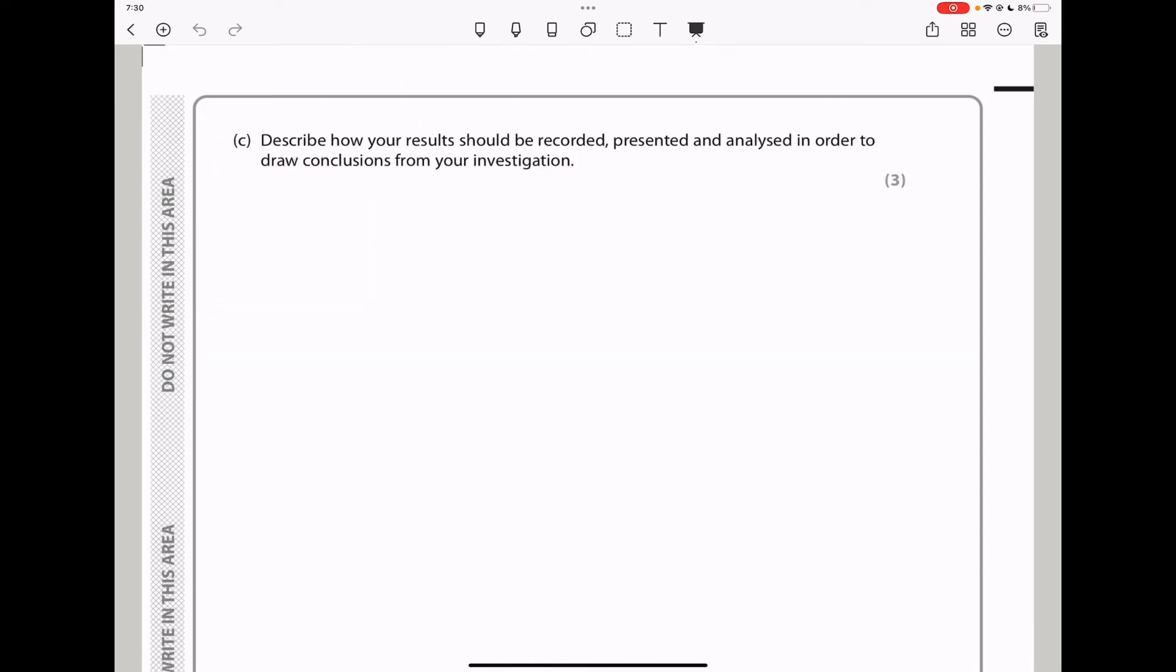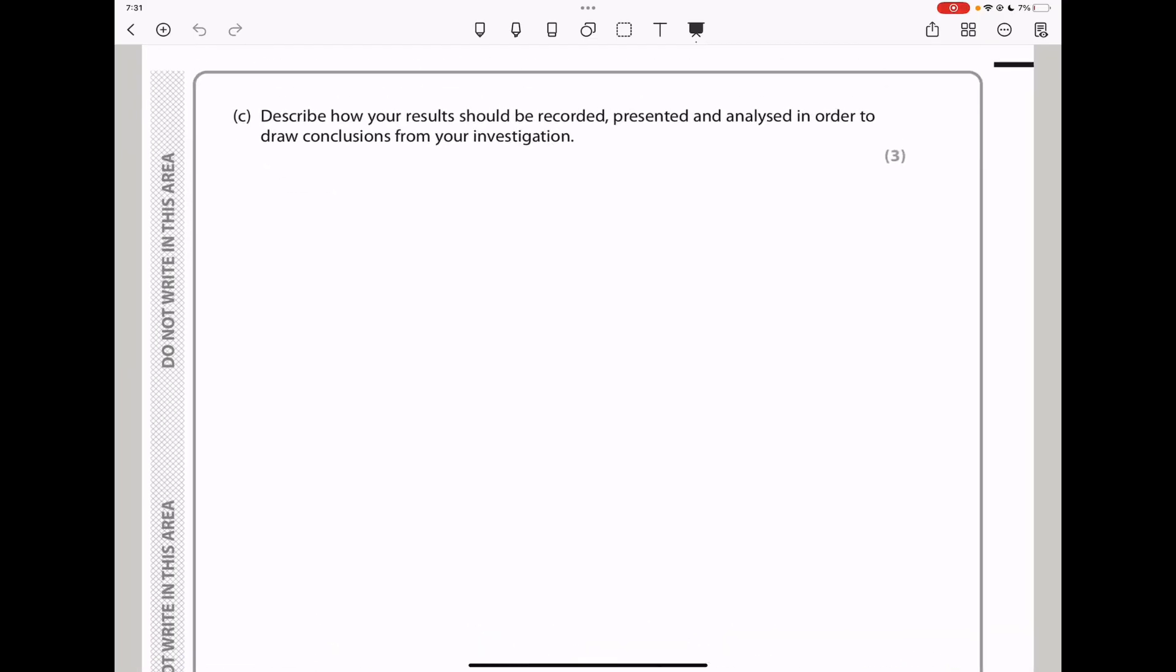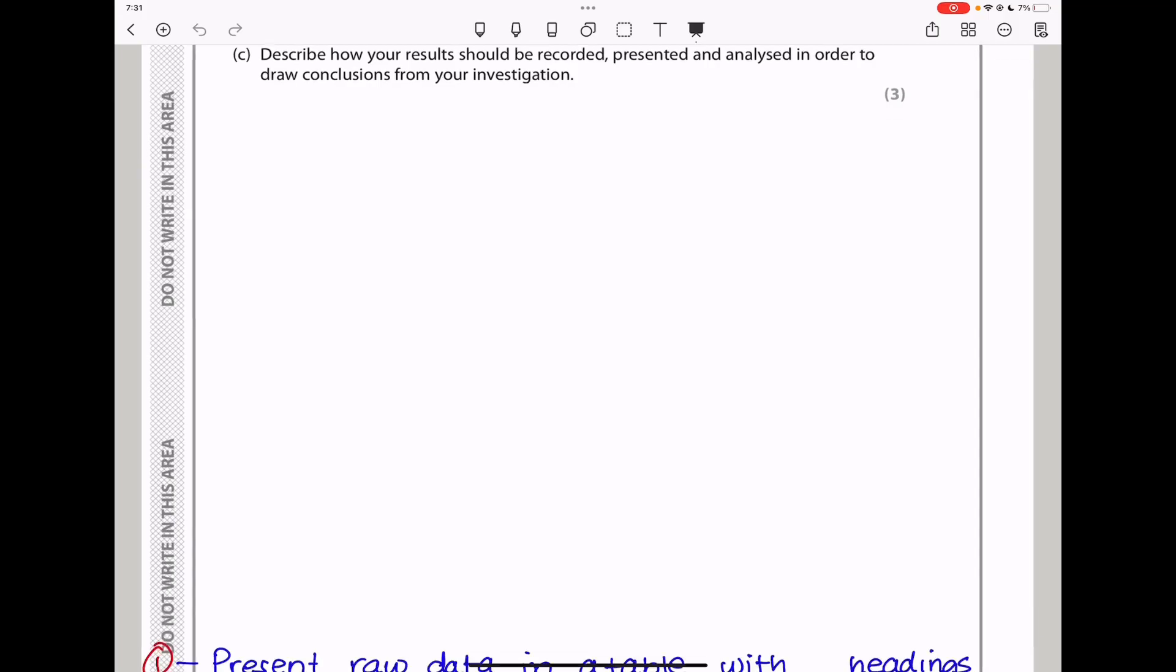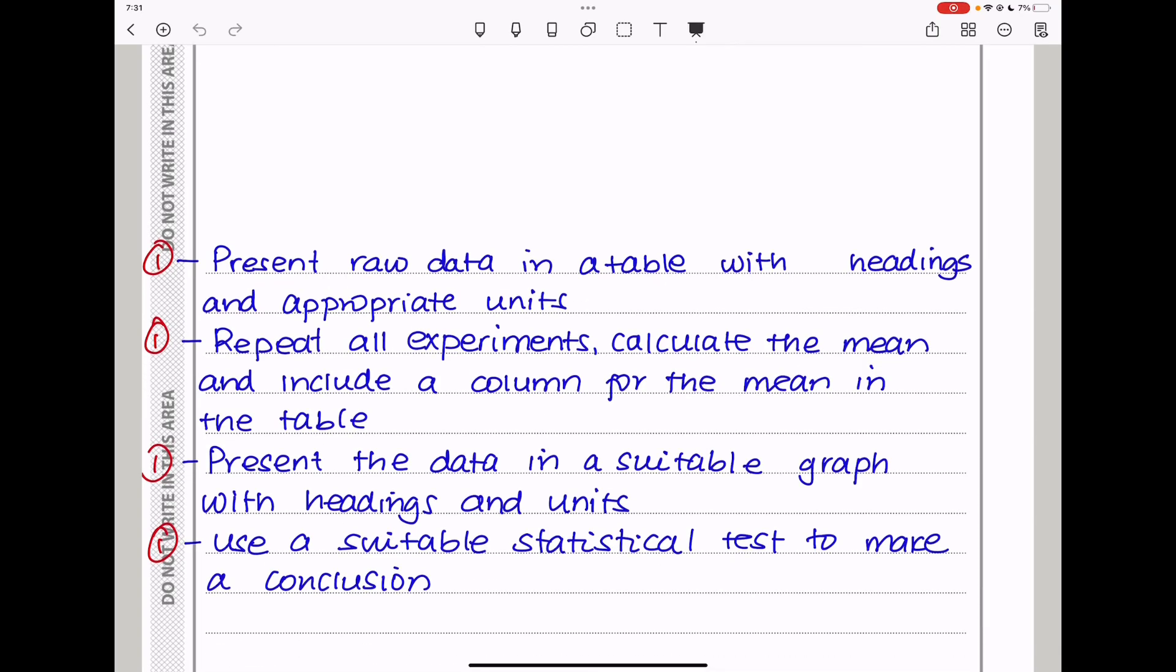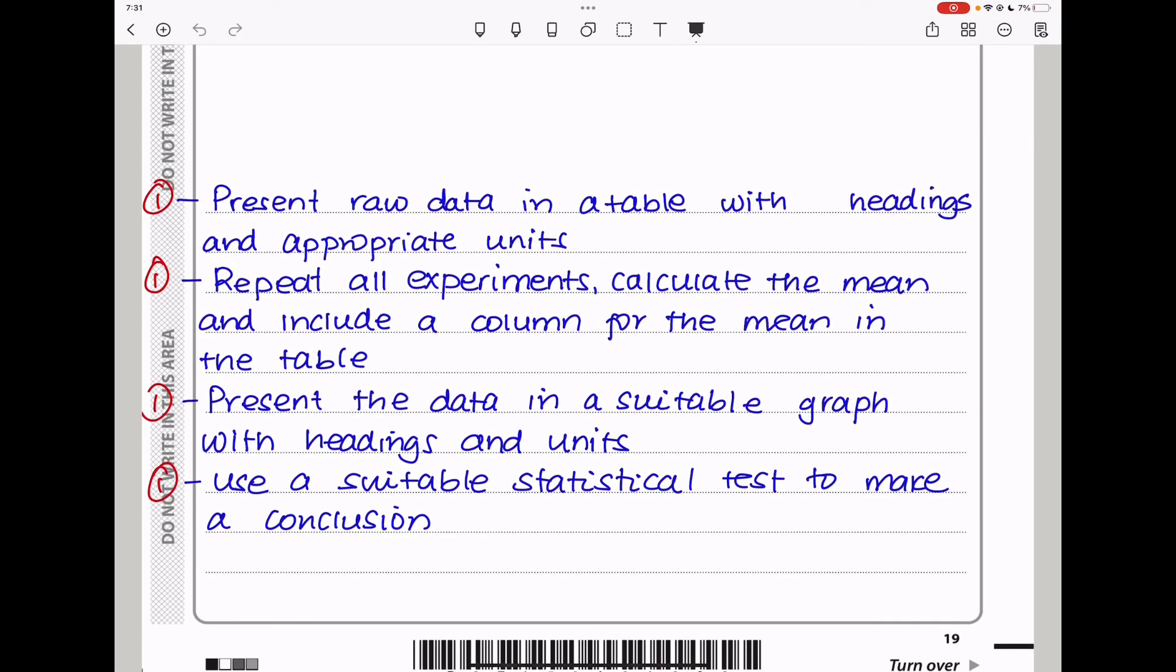In part C, they say, describe how your results should be recorded, presented, and analyzed in order to draw conclusions from your investigation. I did not draw anything in this space and it's not a requirement for you to draw anything so I just wrote down here. So I said, present your data in a table with headings and appropriate units. You need to repeat all experiments and calculate the mean and include a column for the mean in the table. Then present the data in a suitable graph with headings and units. And finally, use a suitable statistical test to make a conclusion. A suitable statistical test could be an experiment that could help you to establish significance.